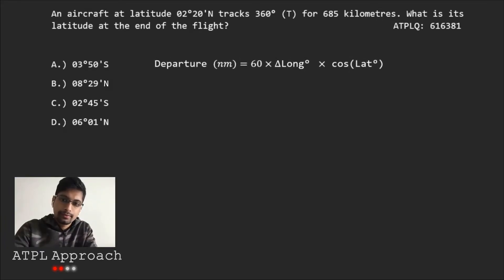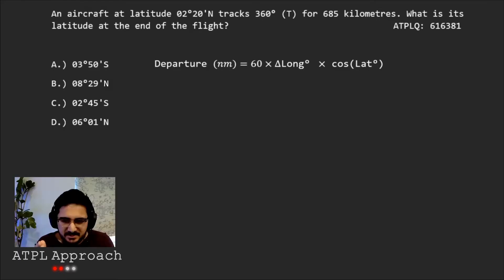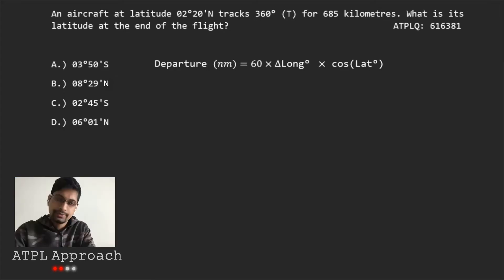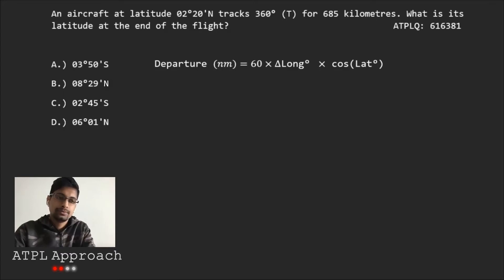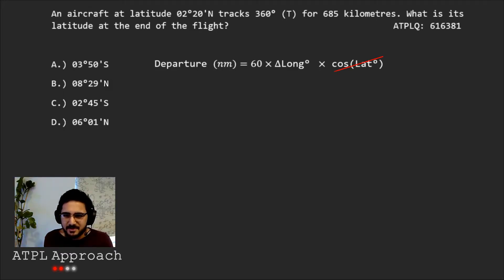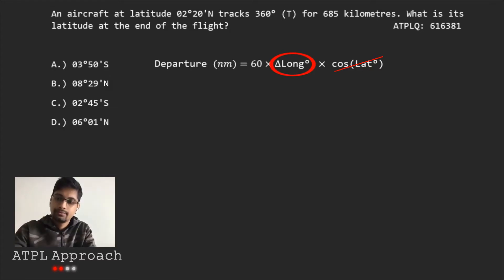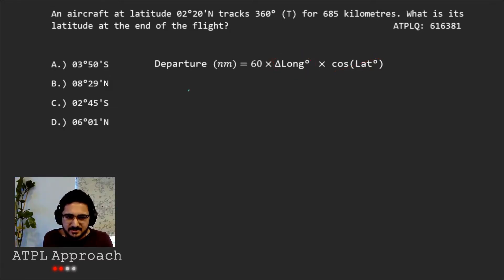Departure. Have you seen Departure before? Have you heard of it? Yes, I have. Departure nautical miles equals 60, your change in longitude, times the cosine of your latitude. But this only really works when you're going east or west. Departure is east or west. But we're doing north and south, right? That's right. But when you go north and south, that is a lot more simpler, really, because the equation becomes... You just basically forget about this.